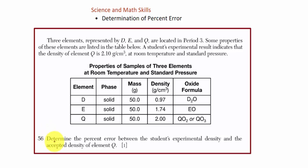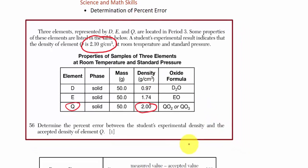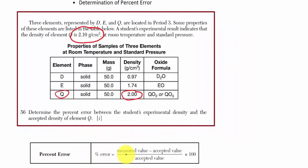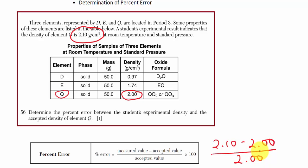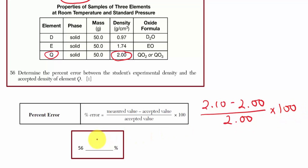Question 56: Determine the percent error between the student's experimental density and the accepted density of element Q. The student's experimental density is 2.10 g/cm³; the accepted value from the data table is 2.00 g/cm³. From table T, percent error equals (measured minus accepted) divided by accepted, times 100. That's (2.10 − 2.00) / 2.00 × 100. Make sure you put 2.00 on the bottom — it's the accepted tabled value. The result is 5% error.